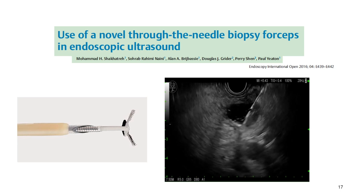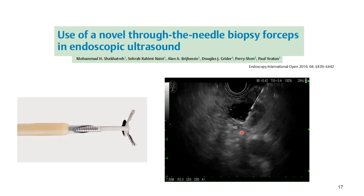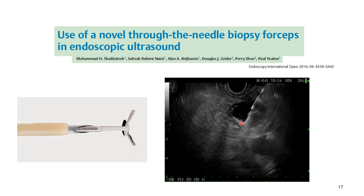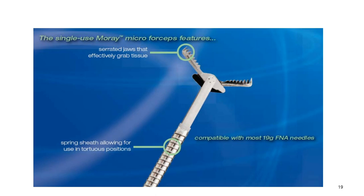Six years later, an American group used the novel through-the-needle microforceps biopsy for the evaluation of pancreatic cystic lesions. They inserted a very thin microforceps from US Endoscopy — it was a Moray forceps — and got biopsy from the cyst wall. They were able to acquire a significant amount of tissue. The first case was IPMN gastric type, and it corresponded to surgical pathology. The second case of IPMN had a lot of squeezing artifacts. This is a close-up view of the single-use Moray microforceps — it has serrated jaws with grasping power, spring sheaths allowing flexibility, and it can go through a tortuous needle path and inside a 19-gauge needle.